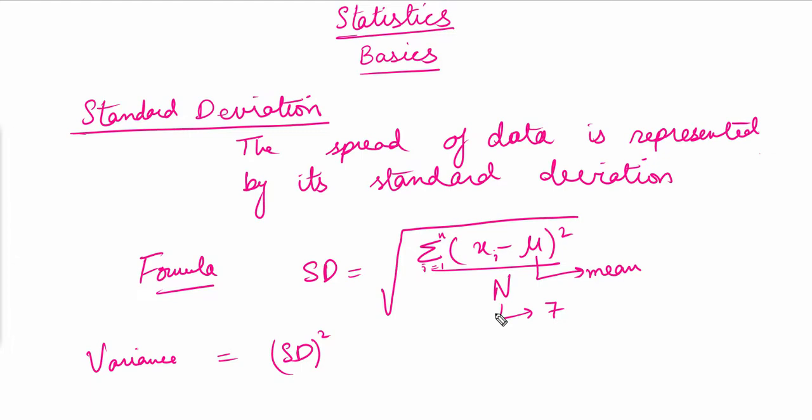The next thing to discuss is box and whisker plots — how we can represent our data on them, or given a box and whisker plot, how we can deduce the median, the interquartile range, the range, and so on.